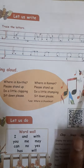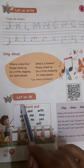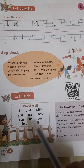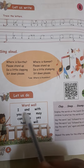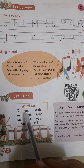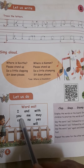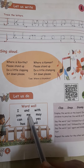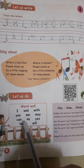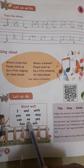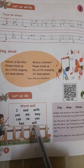Next, let us do the words. What words are there? I, but, me, can, no, yes, has, will.